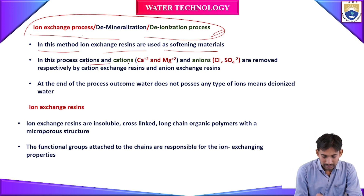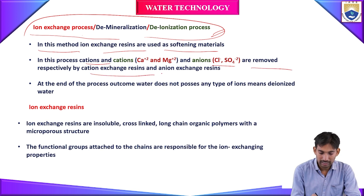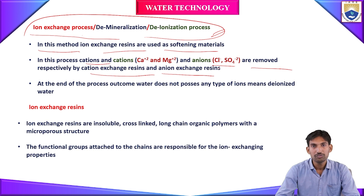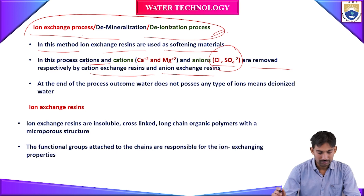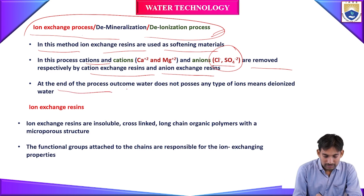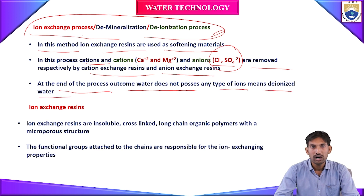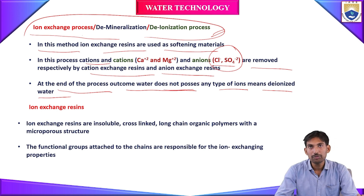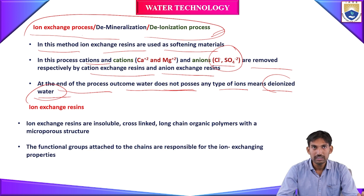In this process, cations — nothing but calcium and magnesium — and anions — nothing but chloride and sulfate ions — are removed by cation exchange resins and anion exchange resins respectively. By using cation exchange resins we separate the cations, and by using anion exchange resins we separate the anions. At the end of the process, the outcome water does not possess any type of ions — we get deionized water.